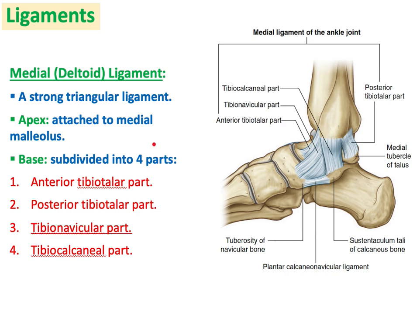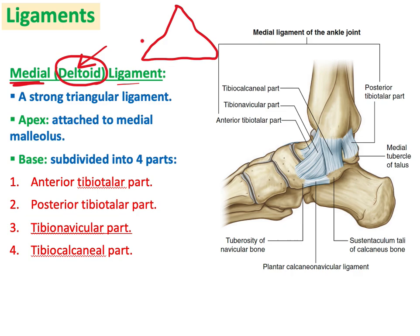As a synovial joint it has ligaments to stabilize it. Many students get confused about the ankle joint, but it is quite straightforward. There are ligaments medially and ligaments laterally. Starting with the medial ligaments: when you mention the medial ligaments of the ankle joint, you must remember they are called the deltoid ligament — it is one ligament with a triangular shape, which is why it is called the deltoid ligament.